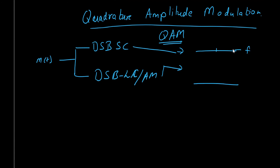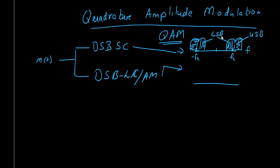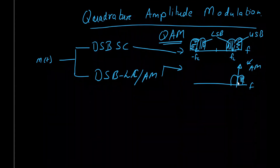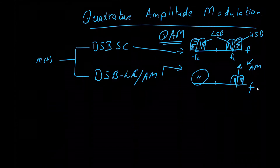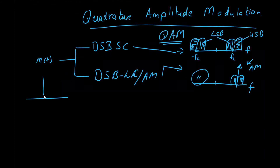for double sideband we have Fc and then we have two lobes, and at minus Fc we again have these two lobes. This is the upper sideband and these two are the lower sidebands. The only difference between DSB-SC and DSB large carrier is that everything is exactly similar, but in AM you have a carrier component available. Both have upper sideband and lower sideband, and this is an even function with the same symmetry in the frequency domain.